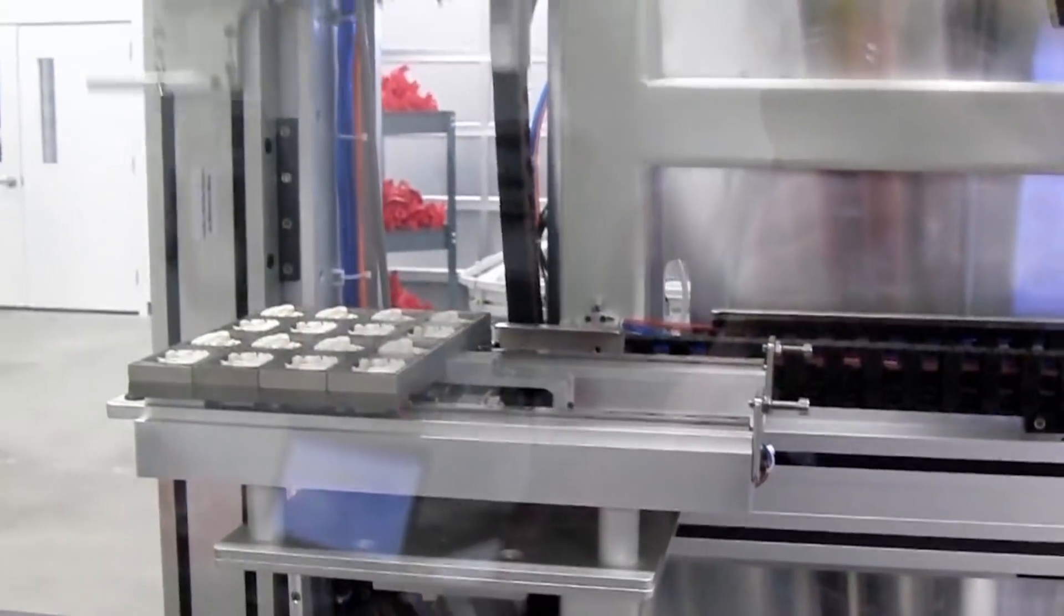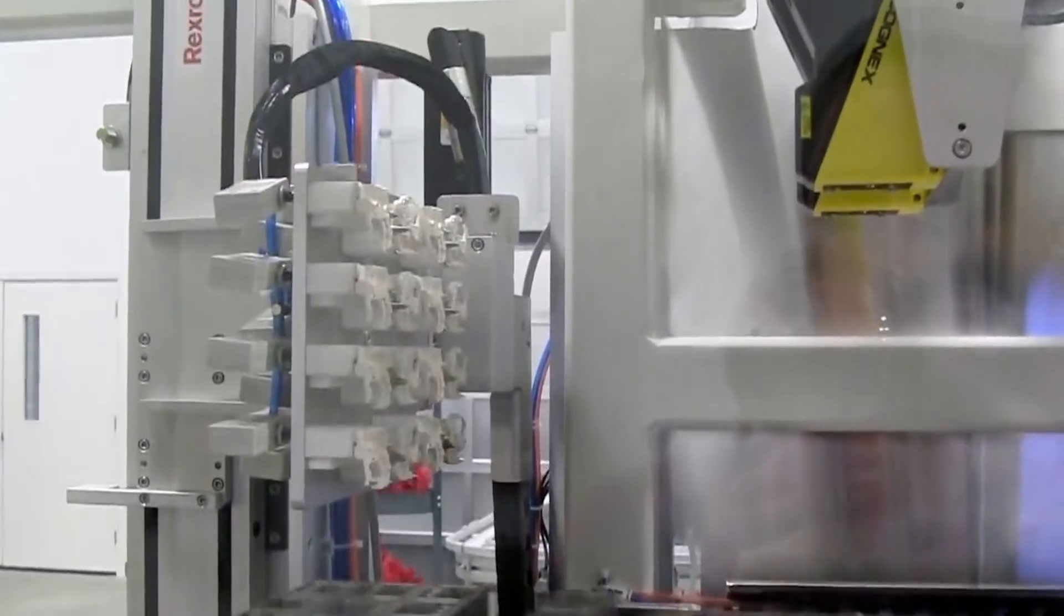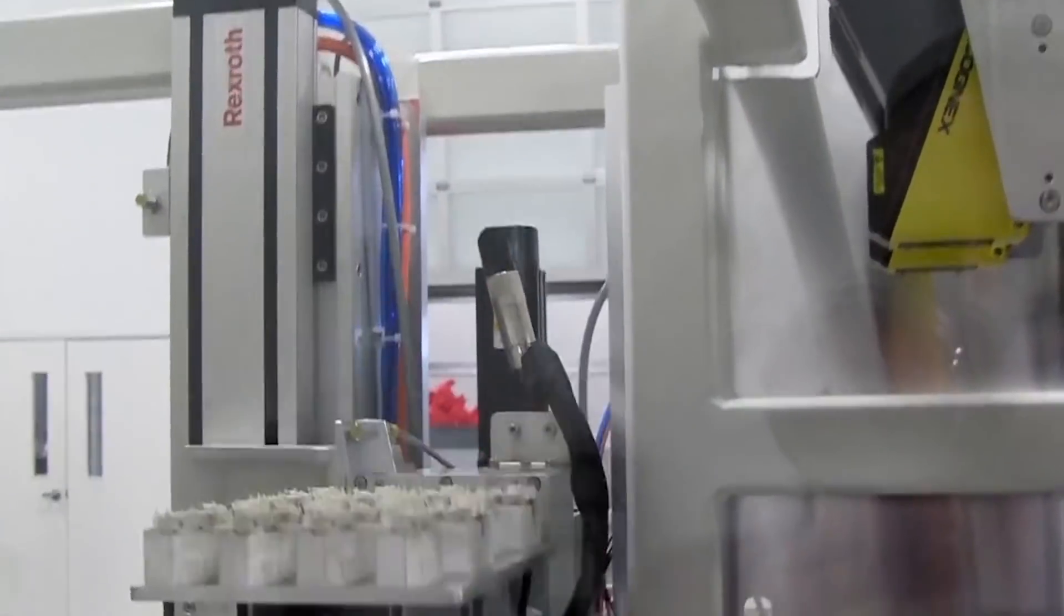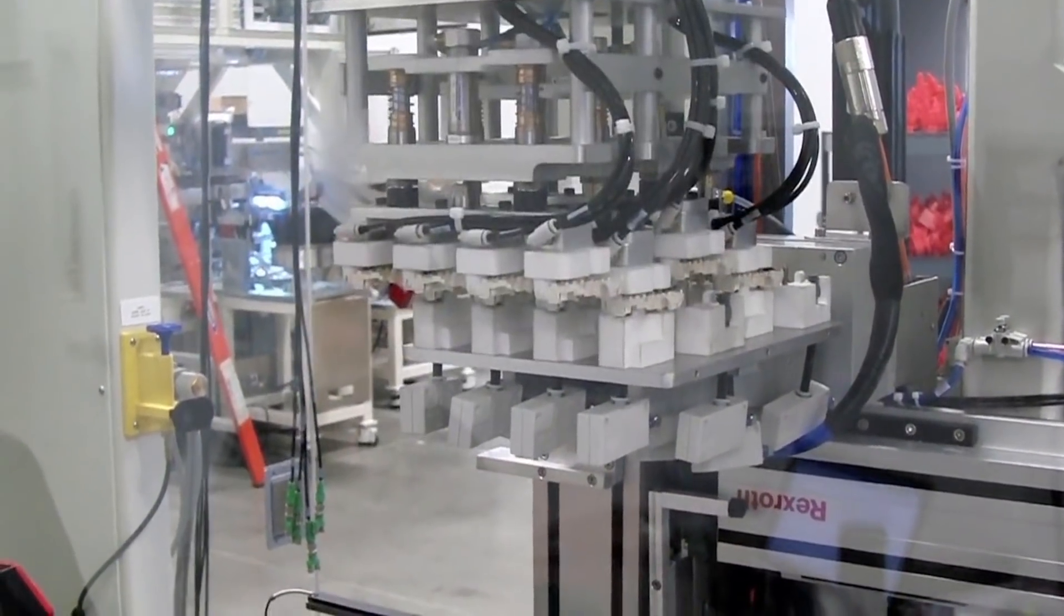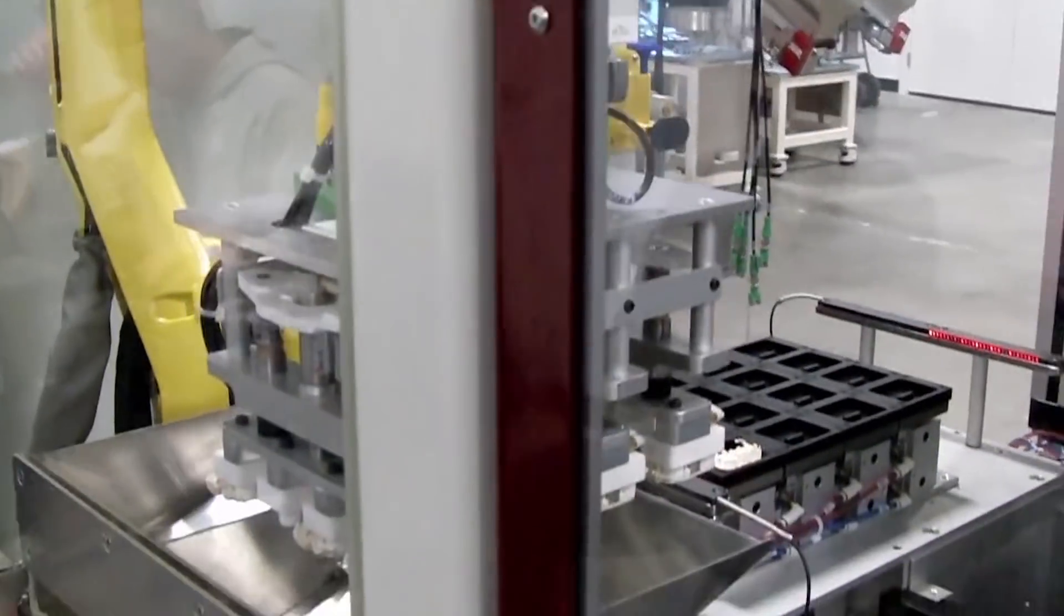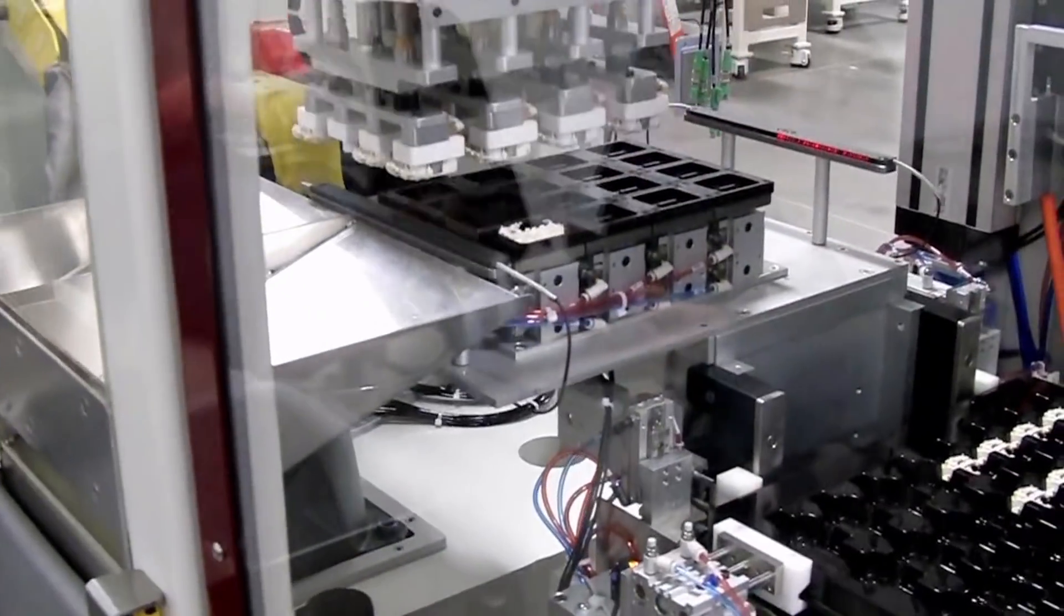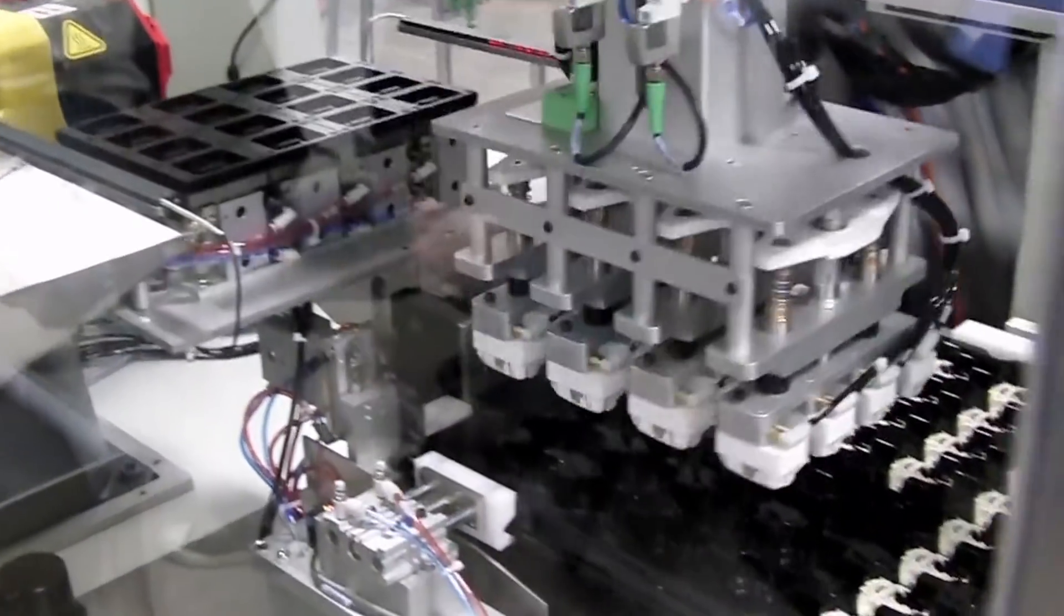After parts are dropped, the FANUC robot moves to replace those parts by picking from a buffer and then placing all 16 parts into a tray. This buffer ensures that all 16 pockets in the tray are filled with a good part.